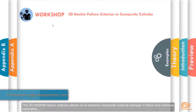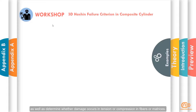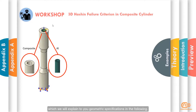The 3D Hashin failure criterion allows us to examine composite material damage in fibers and matrices separately, as well as determine whether damage occurs in tension or compression in fibers or matrices. To get more familiar with the problem, this composite cylinder with an aluminum liner inside has a dumbbell shape, and we will explain the geometric specifications in the following.